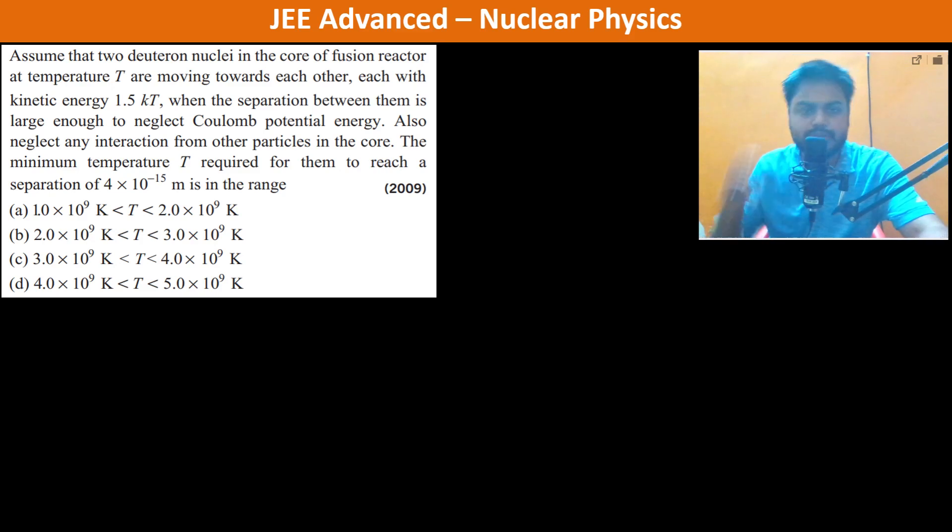Assume that two deuteron nuclei in the core of a fusion reactor at temperature T are moving towards each other, each with kinetic energy 1.5 kT, when the separation between them is large enough to neglect Coulomb potential energy.